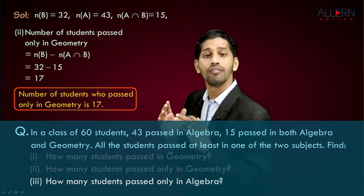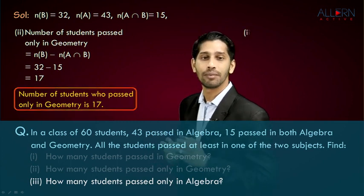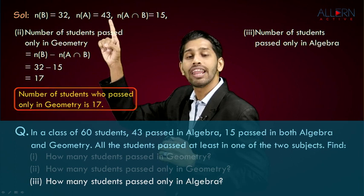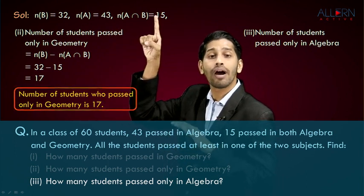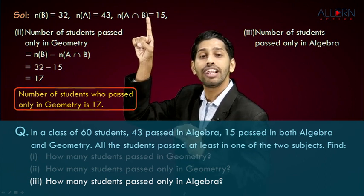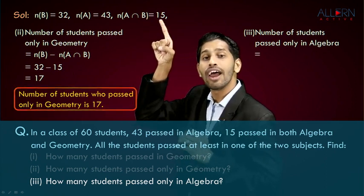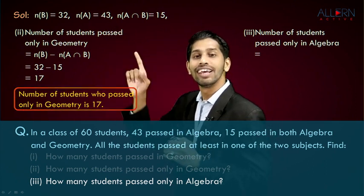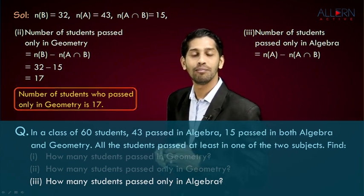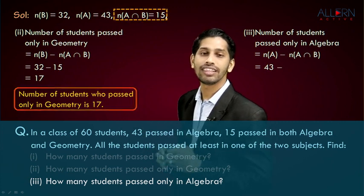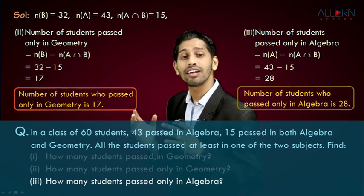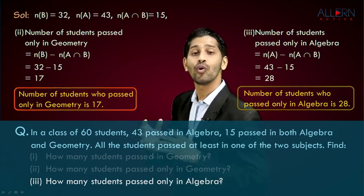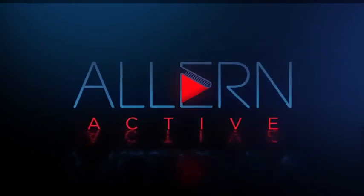The third sub-question asks for the number of students who passed only in algebra. The number of students who passed in algebra is 43, but out of these 43, there are 15 students who also passed in geometry. So to find students who passed only in algebra, we calculate N(A) − N(A ∩ B) = 43 − 15 = 28. The number of students who passed only in algebra is 28. That completes our solution.